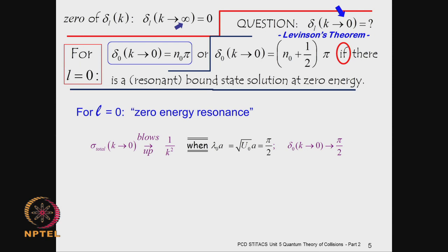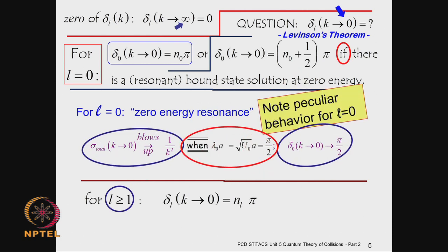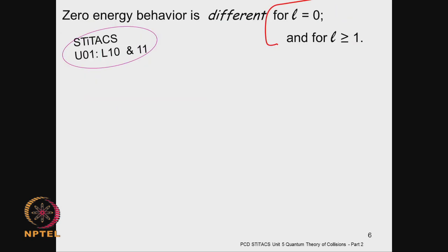At this zero-energy resonance the cross section blows up as 1/k². As k tends to 0 it just shoots off. For L = 1 or greater than 1, the phase shift is always an integral multiple of π, the integer being the number of bound states for that particular potential. There is a peculiar behavior for S-waves, and the zero-energy behavior is therefore different for L = 0 and for L ≥ 1.